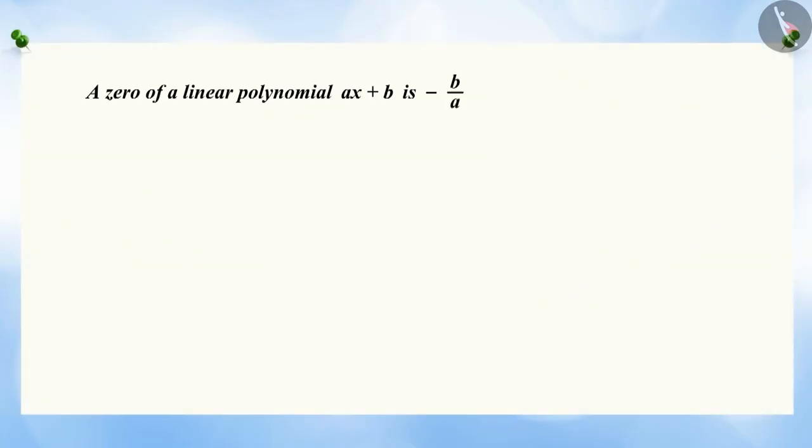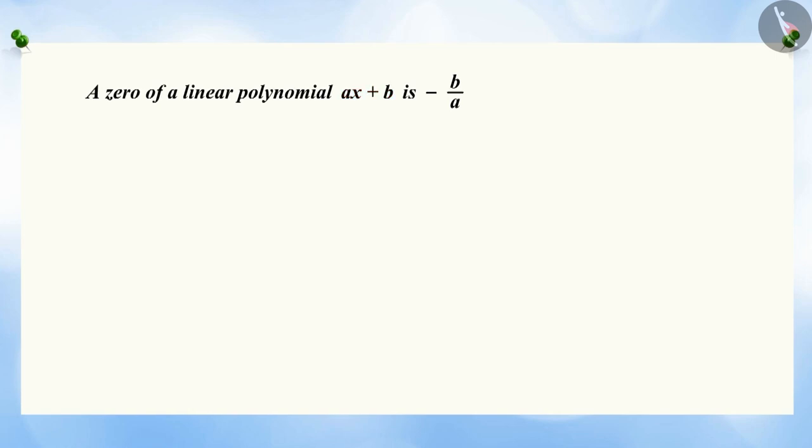In your previous class, you have learned that a zero of the linear polynomial AX plus B is negative B by A.